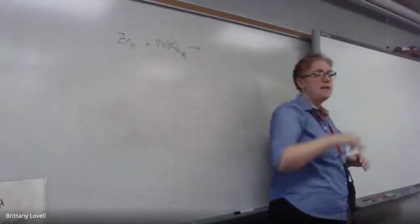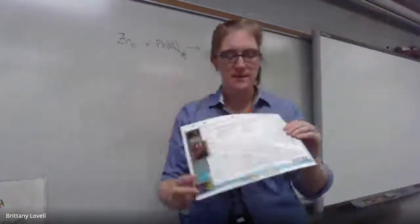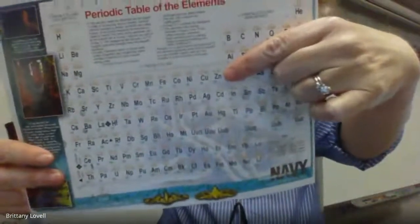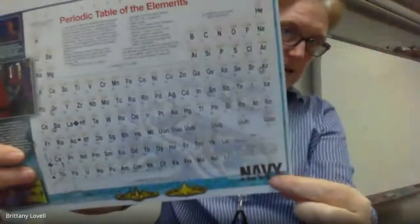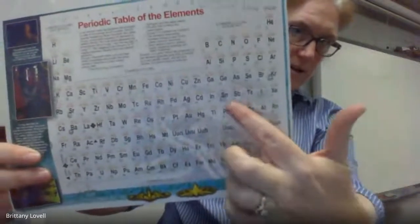So do you guys see where zinc is over on the periodic table? Zinc is number 30, which is right there. And then lead is down there, it's like number 82, somewhere down in here.